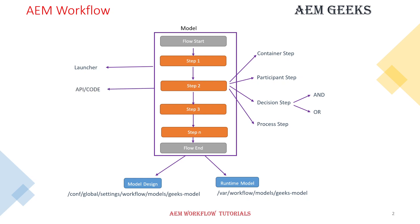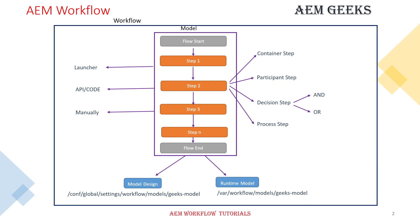The second way is using API or code. When you want to trigger this workflow programmatically, you can trigger it in any backend module — like a servlet, scheduler, sling model, or service. The third way, and the simplest, is manual. In AEM you have a console where you can trigger this workflow manually. When you combine all these things together, this is logically called an AEM workflow.